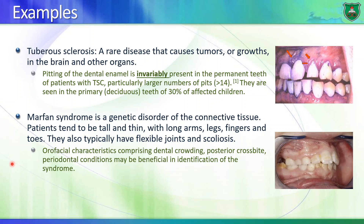Examples related to craniofacial disorders: tuberous sclerosis is a rare disease causing tumors or abnormal growth in the brain and other organs, and affected individuals show pitting of the enamel. The Marfan syndrome is a genetic disorder in the fibrillin protein that results in abnormal gum in affected individuals.